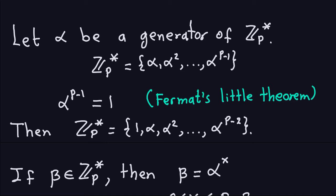So this last element, alpha to the p-1, is just one. I'll move this one to the beginning, so my sequence starts: one, alpha, alpha squared, and goes to alpha to the p-2, because the next one — alpha to the p-1 — is one, which I already wrote at the beginning. This is the setup, and this is how I write Cp-star.